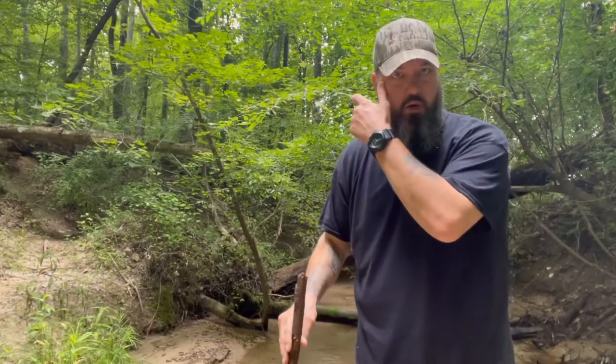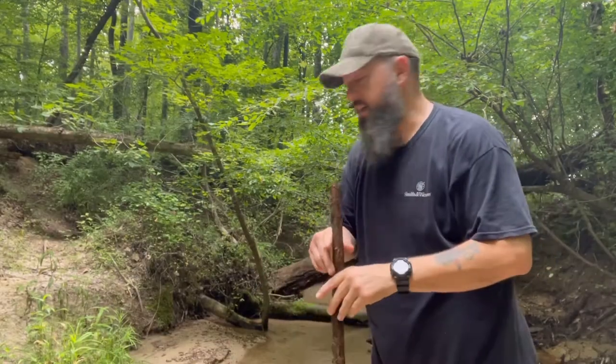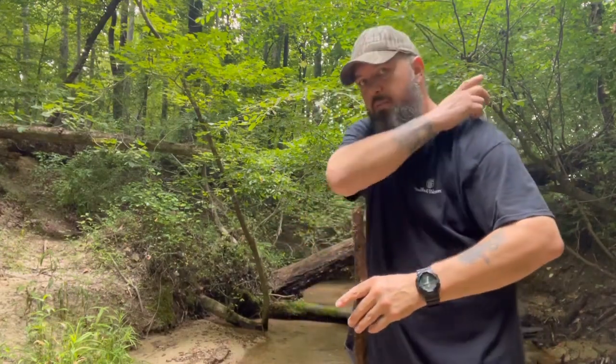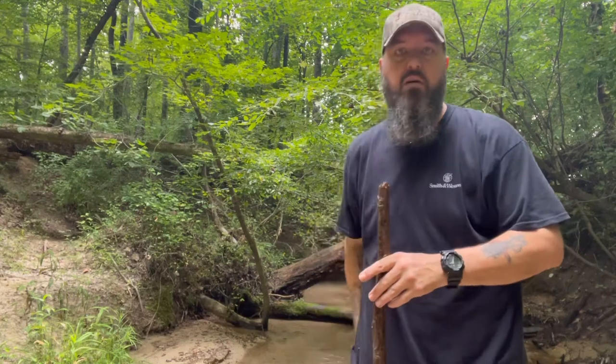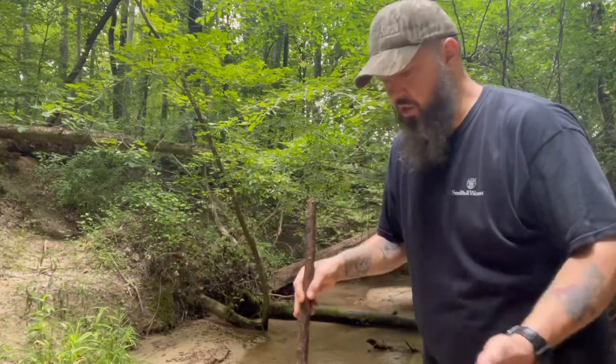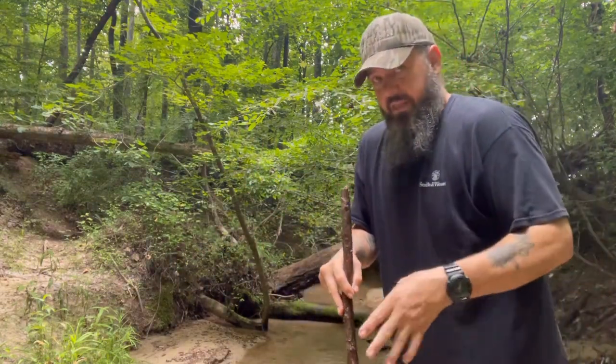Alright y'all, we're out here at the school property today. I'm actually standing in the creek. What we're going to talk about is what's known as a seep well or a coyote well. Sometimes you'll hear it called an Egyptian well or an artesian well, or you can just simply call it that hole in the ground by the creek.